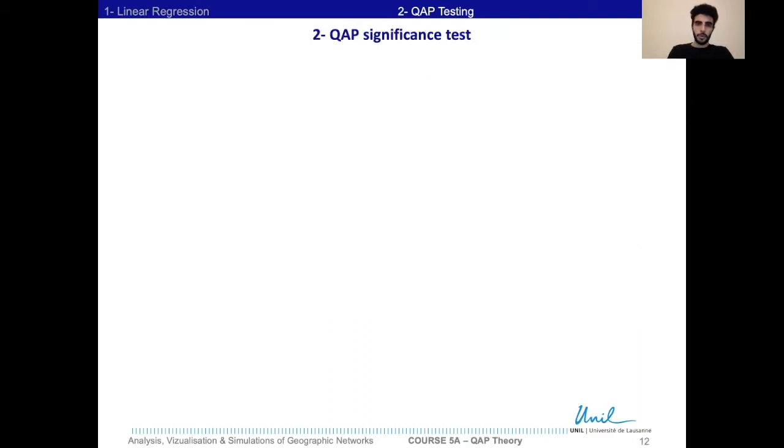So here we propose another test, which is the QAP test that will allow us to test for the significance of beta in the case of networks.